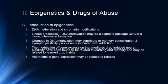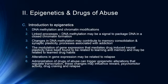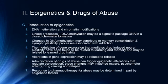Administration of drugs of abuse can trigger epigenetic alterations that regulate transcription; these changes may influence reward, psychomotor activity, drug craving, and relapse. Responses to pharmacotherapy for treatment of abuse may be determined in part by epigenetic factors. Trying to determine the best treatment for someone addicted to alcohol or drugs may involve determining some of their genetic structures and genetic coding, and then figuring out targeted treatments for those individuals.